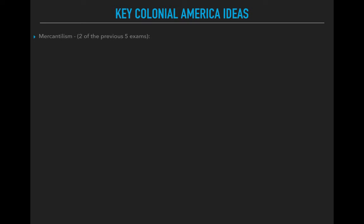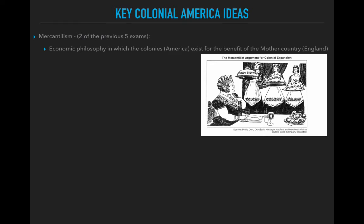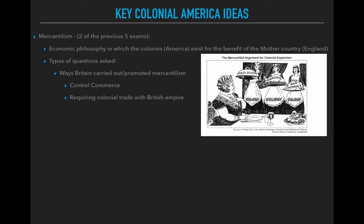Let's start off with mercantilism. This is something you should be familiar with from Global 2, and two of the five previous exams had multiple choice questions about it. This is the economic philosophy in which the colonies exist for the benefit of the mother country — in this case England or Great Britain. The colonies are serving the mother country gold, silver, foodstuffs, and raw materials. Questions have asked about ways that Britain carried out mercantilism, and the answers involve controlling commerce or requiring Colonial trade with the British Empire.